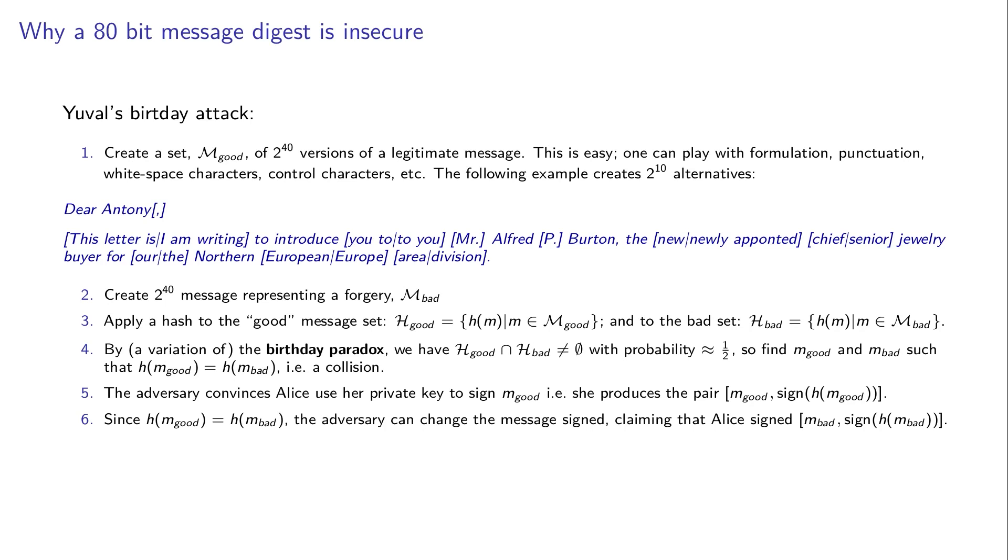versions of some legitimate message, say a recommendation letter. And this may seem difficult but it's actually not. You can play with formulation, punctuation, white space characters, control characters. If you have a phrase with ten different options, that means overall we can have 2 to the power of ten alternatives. So if we have a slightly longer document, it's easy to create 2 to the power of 40 versions of this message. And we can also create a forgery, maybe an IOU saying that one party owes money to the other.